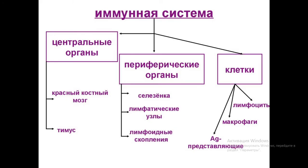На следующем слайде схематично представлена разбивка органов иммунной системы: центральные органы — красный костный мозг и тимус, периферические органы — селезёнка, лимфатические узлы и лимфатические скопления. К клеткам иммунной системы относятся лимфоциты: B-лимфоциты, а также макрофаги и фагоциты, которые отвечают за клеточный иммунитет и первыми вступают в защиту с посторонними антигенами.